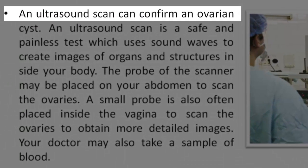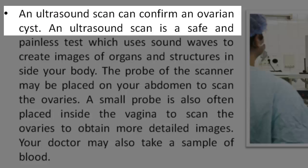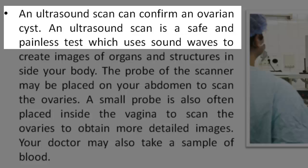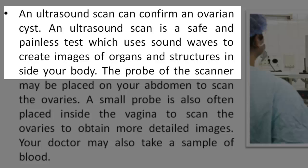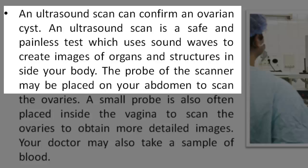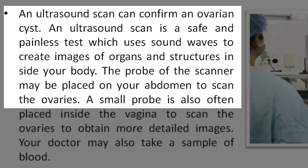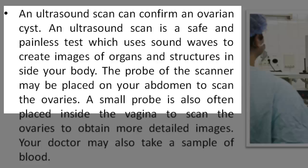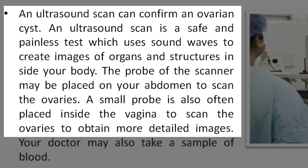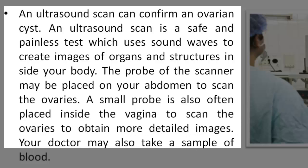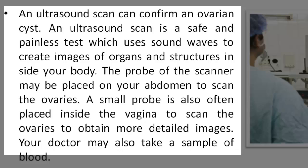An ultrasound scan can confirm an ovarian cyst. An ultrasound scan is a safe and painless test which uses sound waves to create images of organs and structures inside your body. The probe of the scanner may be placed on your abdomen to scan the ovaries. A small probe is also often placed inside the vagina to scan the ovaries to obtain more detailed images. Your doctor may also take a sample of blood.